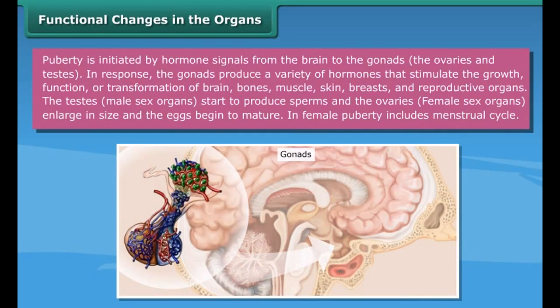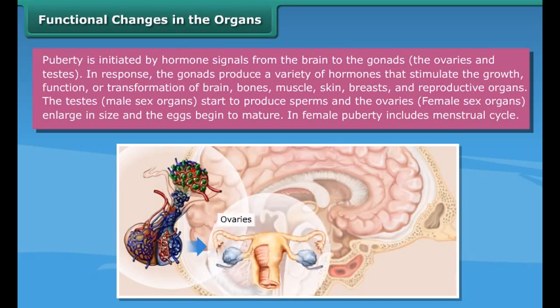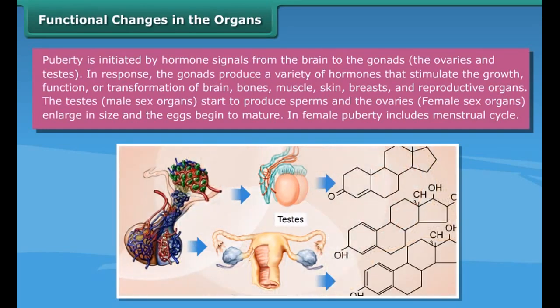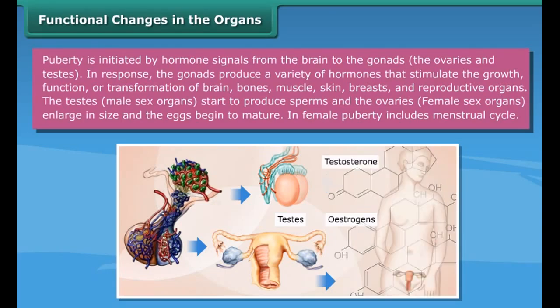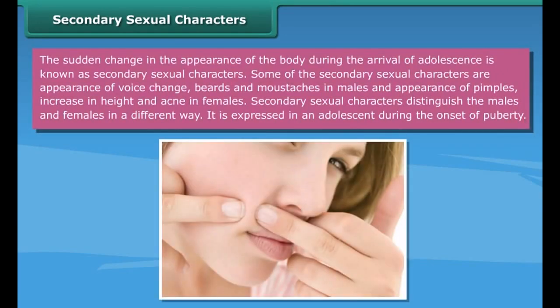Underarm (axillary) hair growth, visible body odor, and pimples: Rising levels of androgens can change the fatty acid composition of perspiration, resulting in a more adult body odor. Another androgen effect is increased secretion of oil (sebum) from the skin and the resultant variable amounts of acne and pimples. Body shape, fat distribution, and body composition also change during this period.